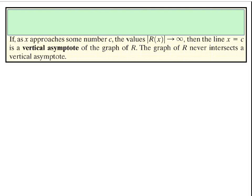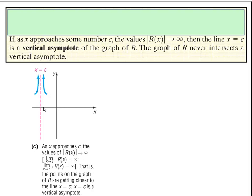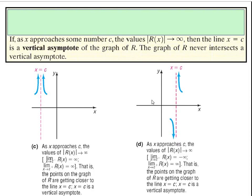The formal definition of a vertical asymptote says: as we approach some number r — typically the division by 0 value — if the y values shoot off to infinity, then that x value is our vertical asymptote. The graph of r will never intersect that vertical asymptote because it is a division by 0. The graph can shoot off to positive infinity from one side and negative infinity from the other side.